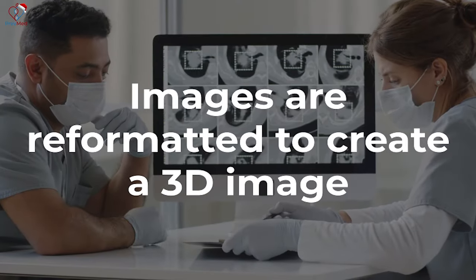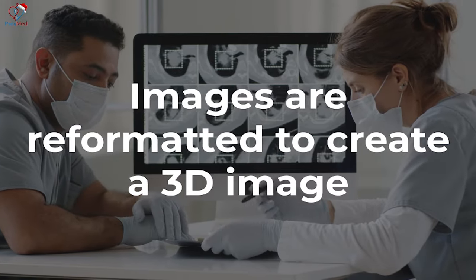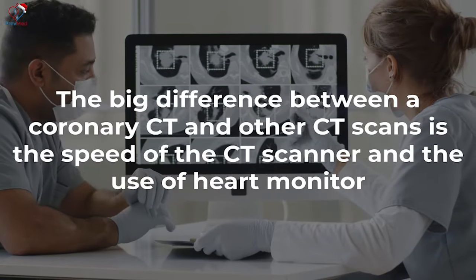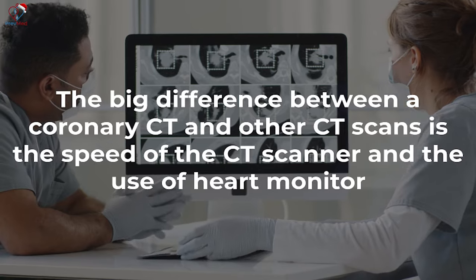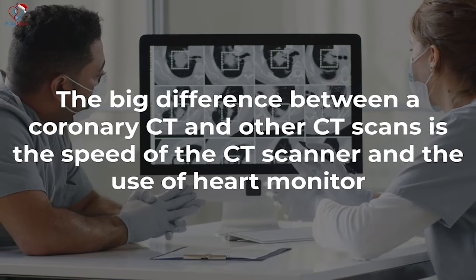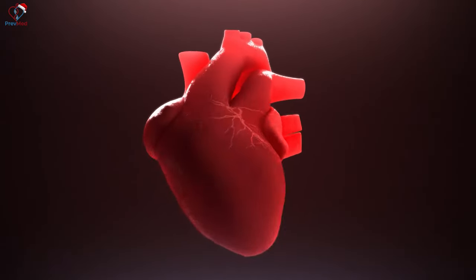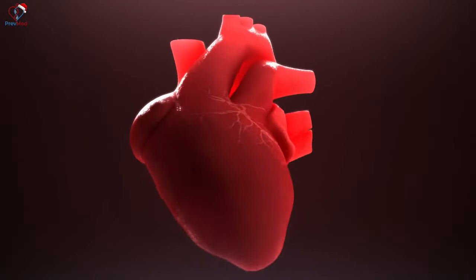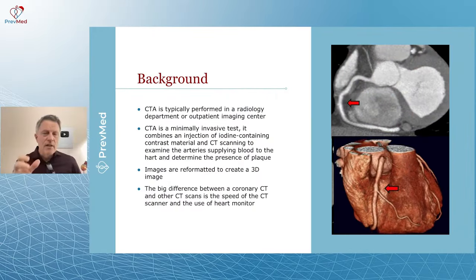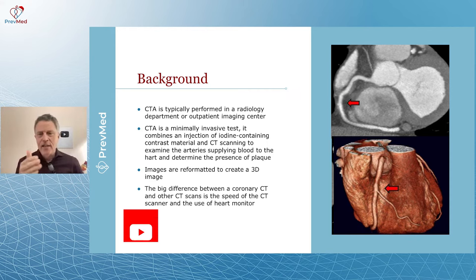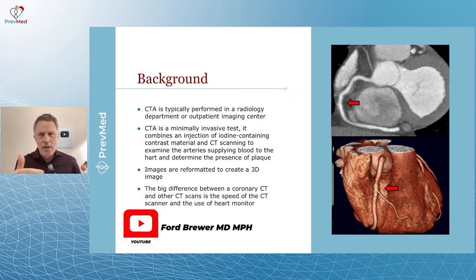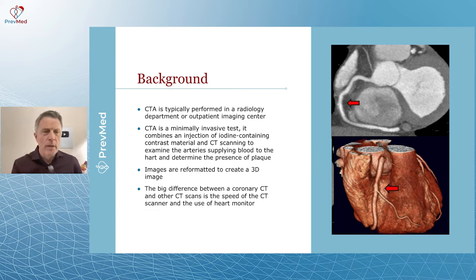Images are reformatted after the CT into a 3D image, as you see. The big difference between a coronary CT and other CTs is the speed of the CT scanner and the use of a heart monitor. The heart is beating, so the CT has to get very quick images and time them to adjust for the movement caused by the heartbeat.